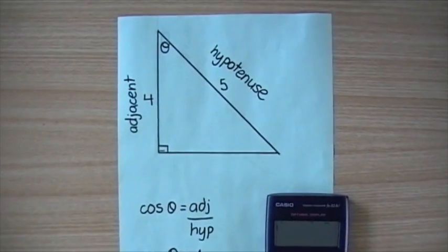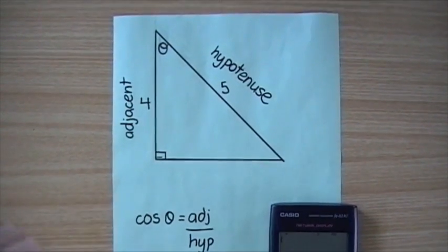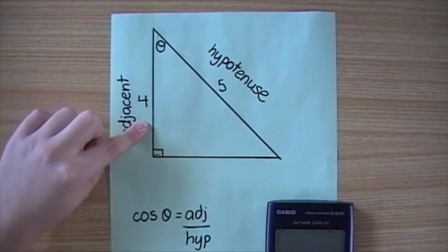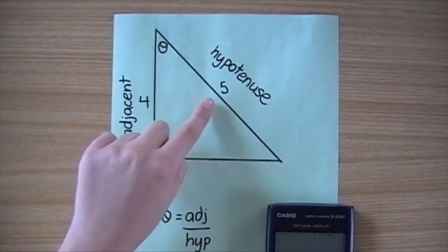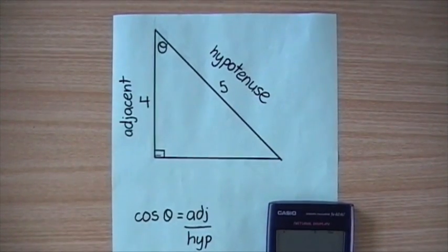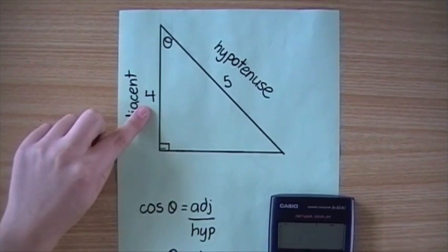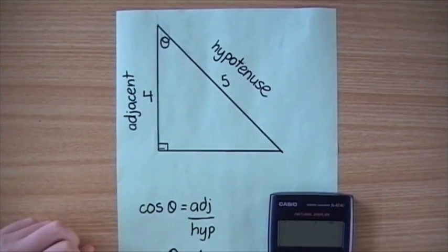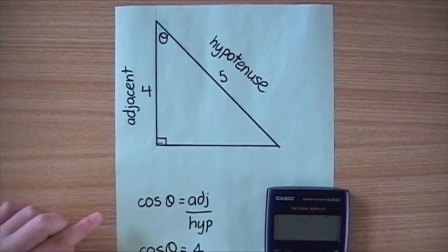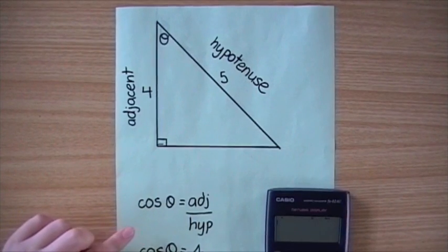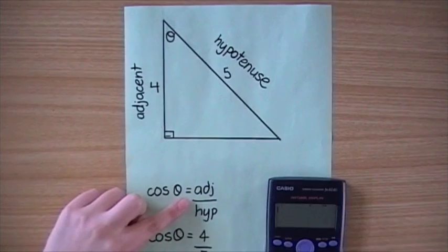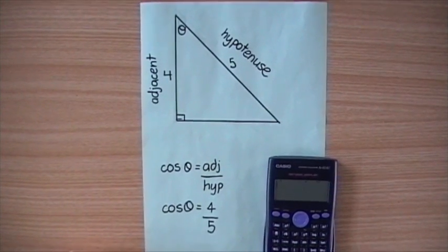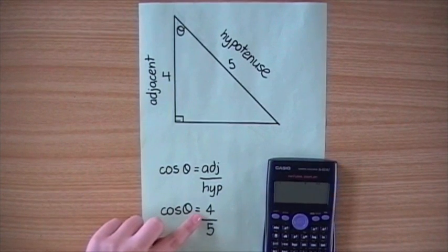In this example, we are asked to find the value of the unknown angle. In relation to the unknown angle, we are given the adjacent side, which is 4, and the hypotenuse, which is 5. We now know that we need to use the cosine ratio to find the value of the unknown angle. The cosine ratio is cosine theta equals adjacent over hypotenuse. Substituting the numbers, we get cosine theta equals 4 over 5.